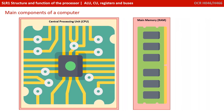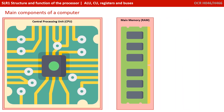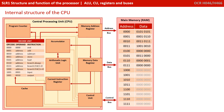We're going to take the lid off the processor now and have a look at the main components inside. Here we have an abstraction of the internal components of the CPU and main memory and how they're connected together. We're going to run through each of these now, explaining their purpose and how they work, and then in later videos we'll show you how they interact together to perform the job of carrying out tasks.